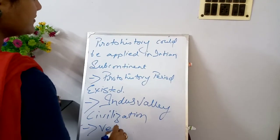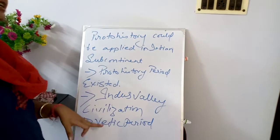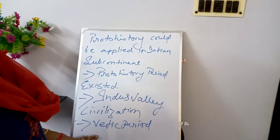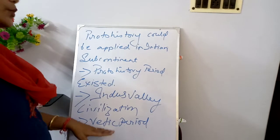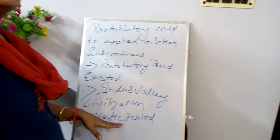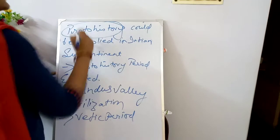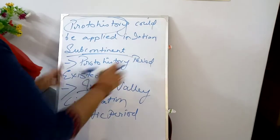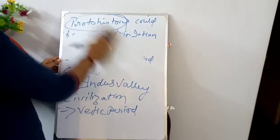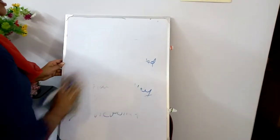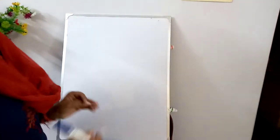During the later Vedic period, people started having the knowledge of writing. But initially, during the initial period of the Vedic age, they did not have the knowledge of writing, and their religious scriptures were orally transmitted from one generation to another. So the proto-history period existed in the Indian subcontinent, as an intermediary between prehistory and history.